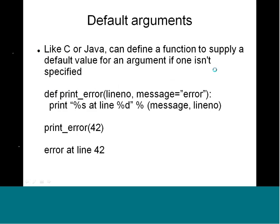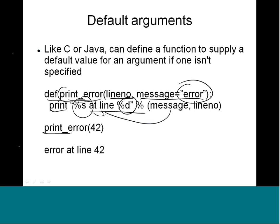Like C and Java, we can define a function with a default value for an argument if one is not specified. These are useful for printing error messages and similar tasks. Here we define a function called print_error that takes a line number and a message — the message defaults to 'error'. When we call print_error(42), it prints 'error at line number 42'. These predefined default values are convenient for common use cases.